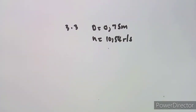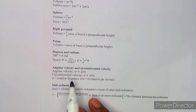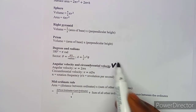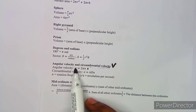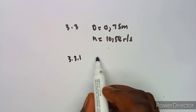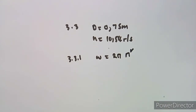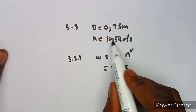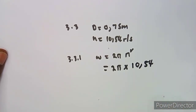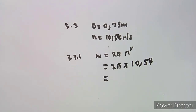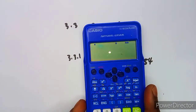For question 3.3.1, we calculate the angular velocity. The formula for angular velocity is ω = 2πn, where n is in revolutions per second, giving the result in radians per second. We substitute n = 10.54.